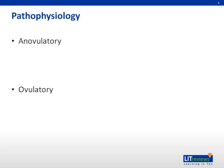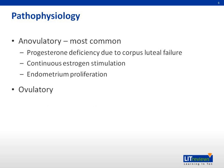The pathophysiology of DUB can be anovulatory or ovulatory. Anovulation is the most common cause, where the ovaries produce estrogen but no progesterone because the corpus luteum fails to form. This results in continuous estrogen stimulation of the endometrium, causing continuous endometrial proliferation without progesterone-induced bleeding. The endometrium continues to proliferate until it outgrows its blood supply, breaks down, and is sloughed off in an irregular pattern.